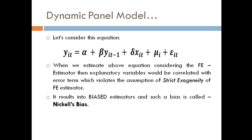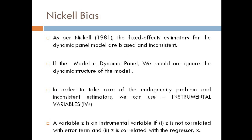Let's consider this equation. When we estimate this dynamic panel structure using the fixed effect estimator, the explanatory variables become correlated with the error term, which violates the assumption of strict exogeneity of the fixed effect estimator. This results in biased estimators, and such bias is called Nickell's bias. As per Nickell (1981), fixed effects estimators for dynamic panel models are biased and inconsistent.